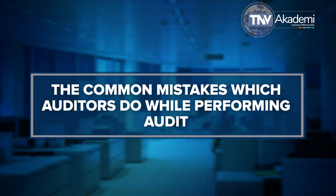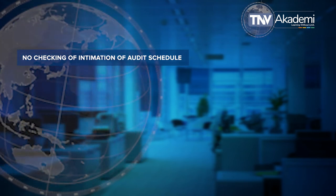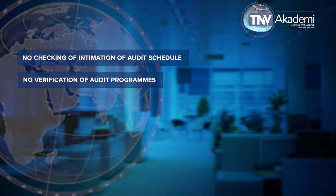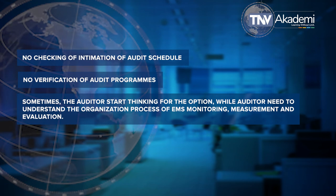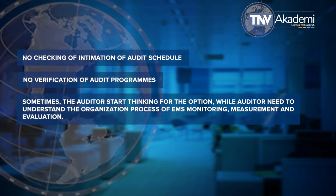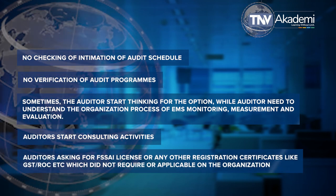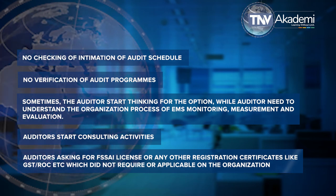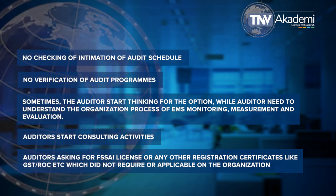Now let's understand common mistakes which auditors make while verifying documents and records during an audit under this clause. Point one: no checking of intimation of audit schedule. Point two: no verification of audit programs. Point three: sometimes the auditor starts thinking of options while the auditor needs to understand the organization's process of EMS monitoring, measurement, and evaluation. Point four: auditors start conducting consulting activities. Point five: auditors asking for FSSAI license or other registration certificates like GST, ROC, etc., which are not required or applicable to the organization.